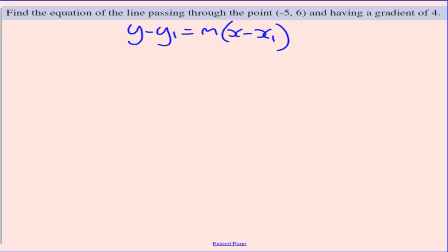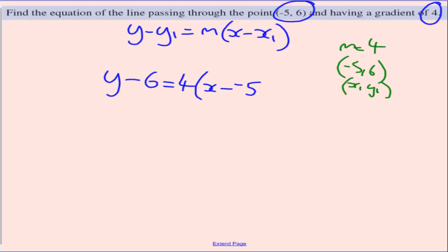Find the equation of a line passing through the point negative 5, 6 and it has a gradient of 4. There are key bits of information. I'm going to write them here over on the side. m equals 4 and the coordinate of negative 5, 6 being x1 and y1. Okay, plugging those into our equation. The first y without a number attached to it stays a y minus our y1 value of 6 equals 4 outside of x minus our x1 value which is negative 5.